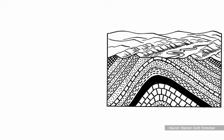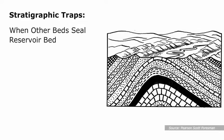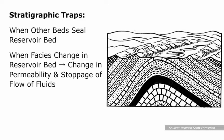On the other hand, stratigraphic traps are formed when other beds seal a reservoir bed, or when the facies change — that is, a change in rock type — within the reservoir bed itself, leading to a change in permeability and stoppage of the flow of fluids.